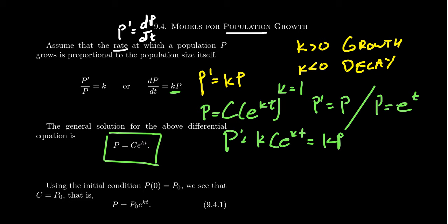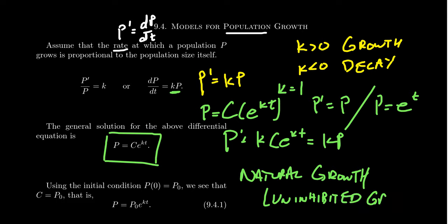And so as a model of population growth, this right here is often referred to as the law of natural growth. Because it's quite natural that when things get bigger, they grow faster. Or sometimes this is referred to as uninhibited growth. For reasons that we will see in the next example, uninhibited growth here.